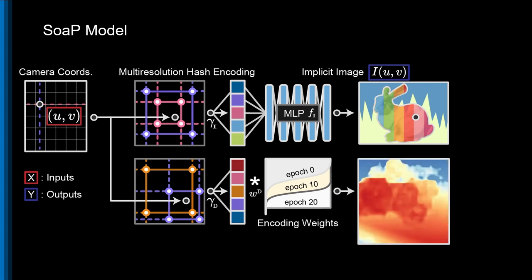At initialization, we only pass through the encoding weights corresponding to coarse grid resolutions, and slowly ramp up to passing the entire positional encoding towards the end of training.